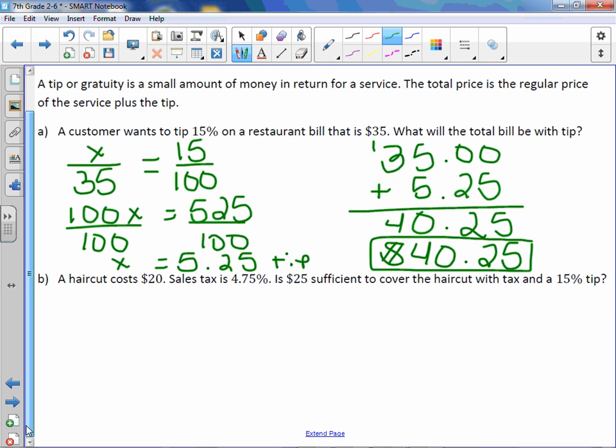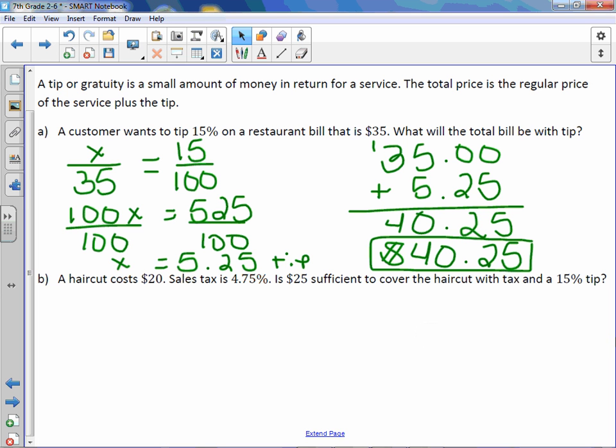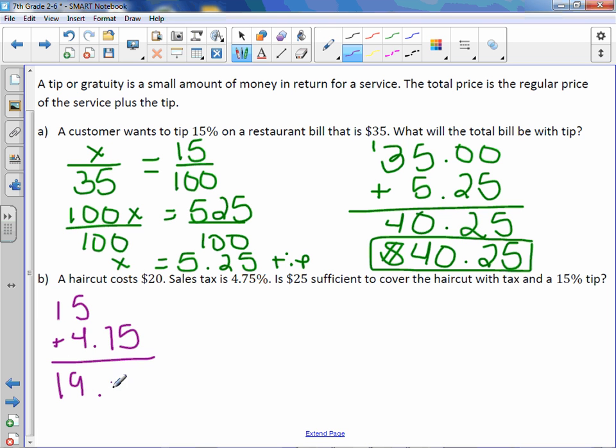Letter B. A haircut costs $20. Sales tax is 4.75%. Is $25 sufficient to cover the haircut with tax and a 15% tip? So sales tax adds to the regular price as well as tip. So we can actually work this into one proportion. We can take our 15% tip and add it to our 4.75% tax to get a total percent of 19.75%. And that's a total percentage that will be added to our bill.